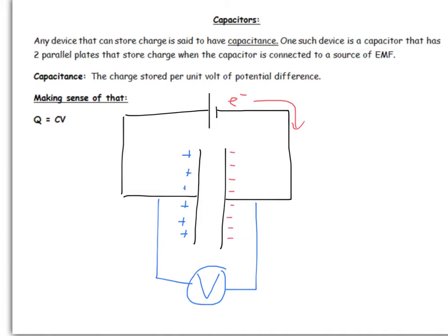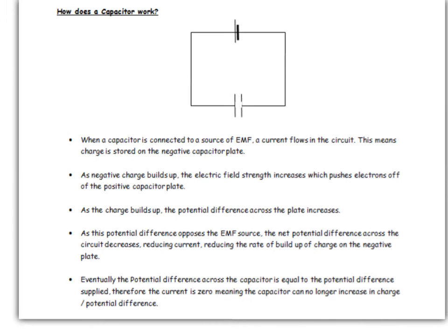To charge a capacitor you need a source of EMF in your circuit — it could be another capacitor, a cell, battery, power pack, the national grid, whatever. First of all, you get a flow of electrons out of the negative terminal of your battery, that's the shorter side of your cell. And as I showed on the previous diagram, that means you get a build-up of negative charge on one plate.